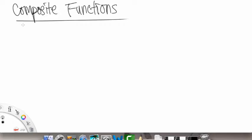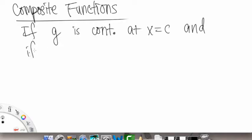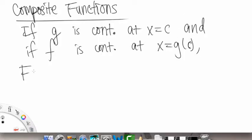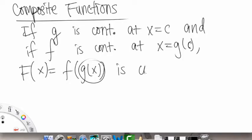So here we have if g, if function g is continuous, continuous at x equals c, and if f, that's another function, is continuous at x equals g of c, so that's some number, then we have that capital F of x, which is equal to f of g of x. So here we have our composition. g is contained or composed within f, function f, is continuous at x equals c.